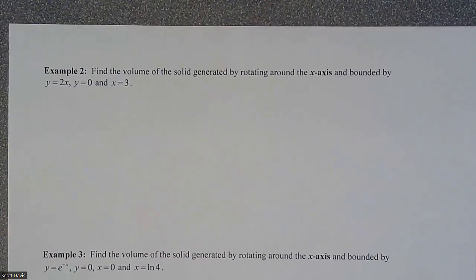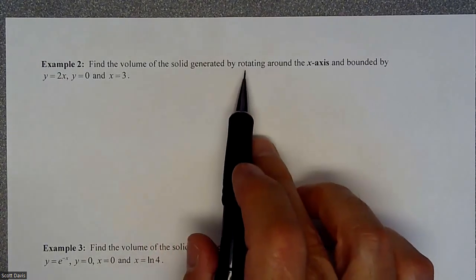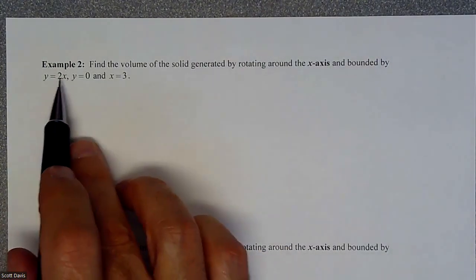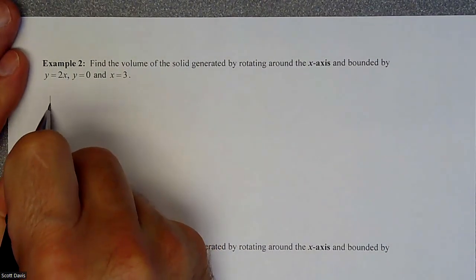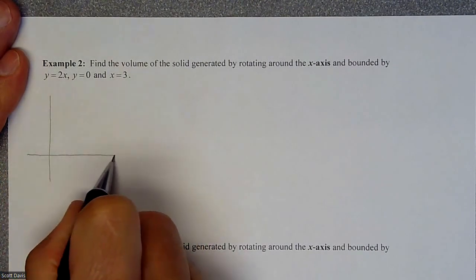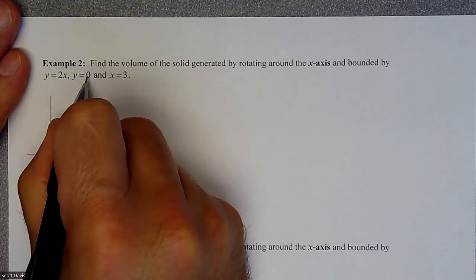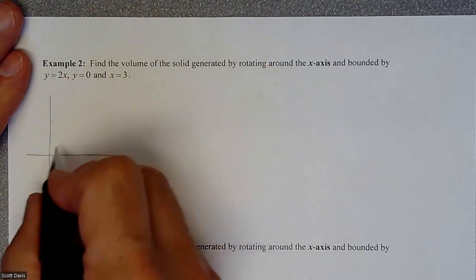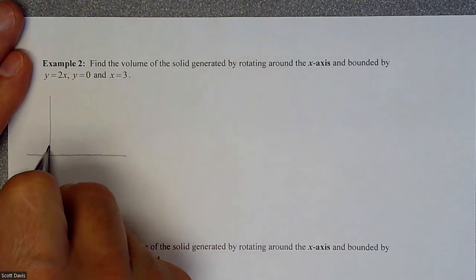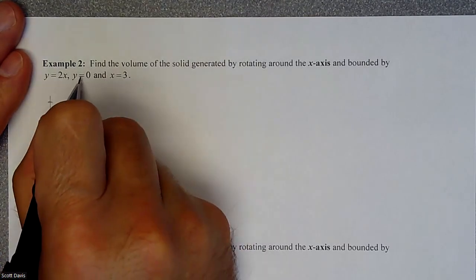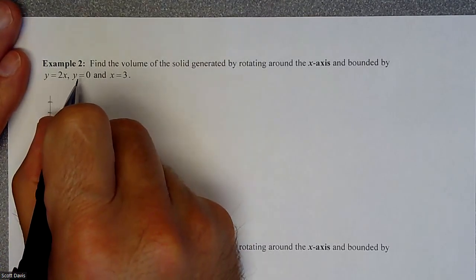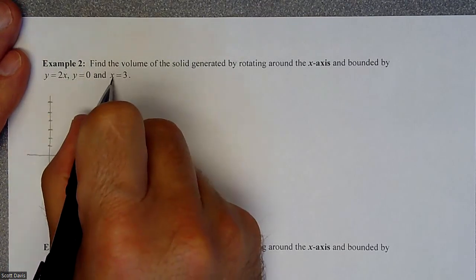Our first example: we're going to find the volume of solid generated by rotating around the x-axis bounded by this information. Let's create a visual and figure out what we've got going on. Our shape is y = 2x. We're going to go from y = 0 to x = 3.